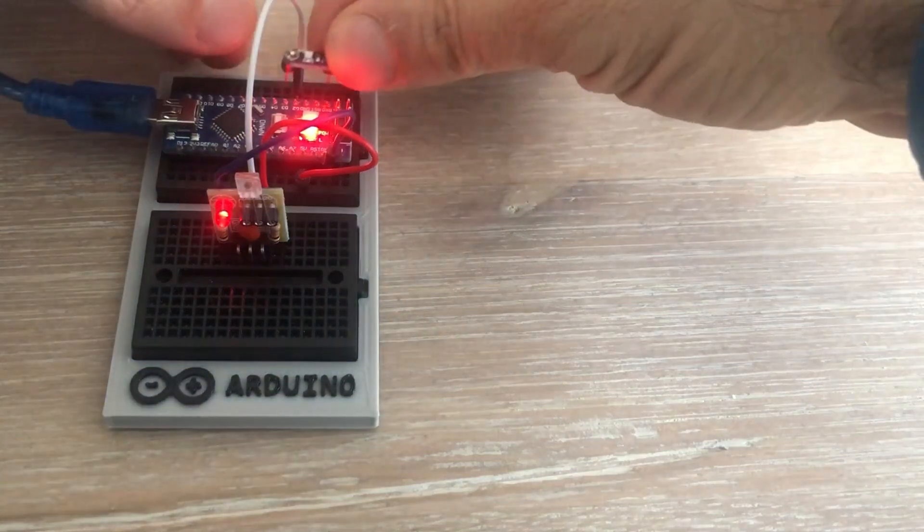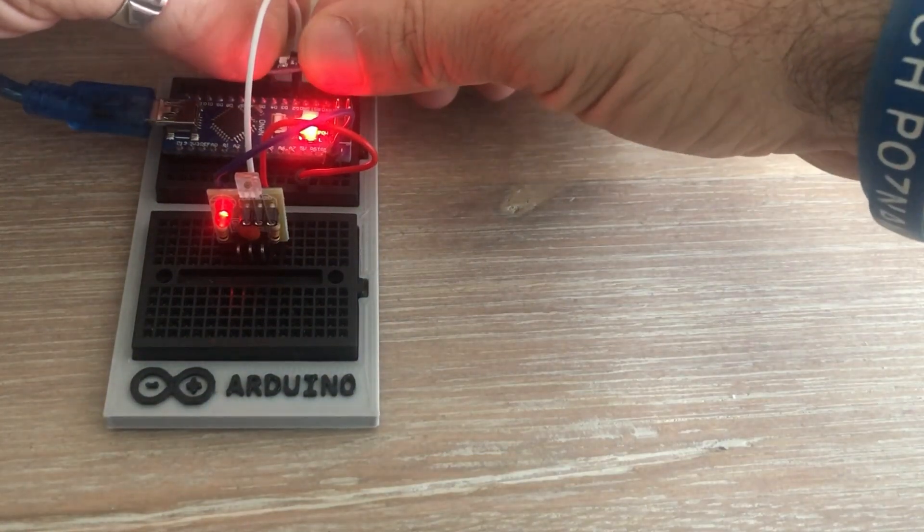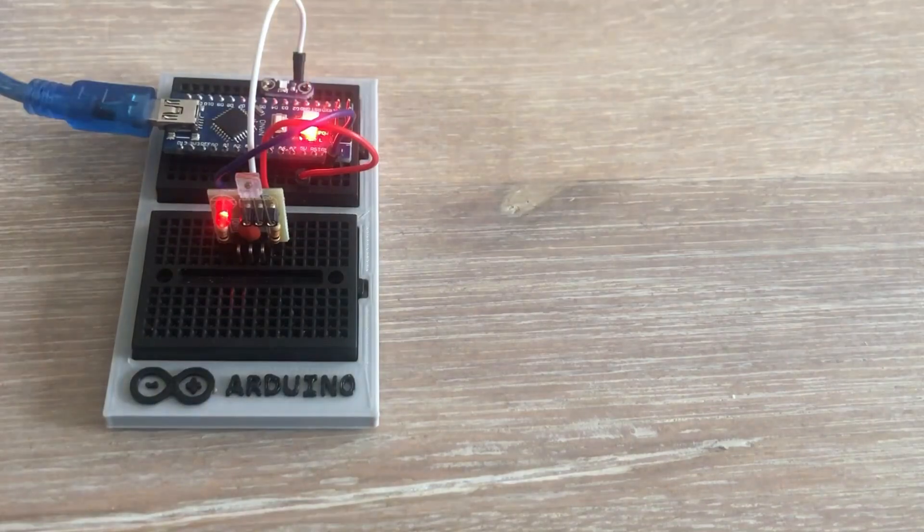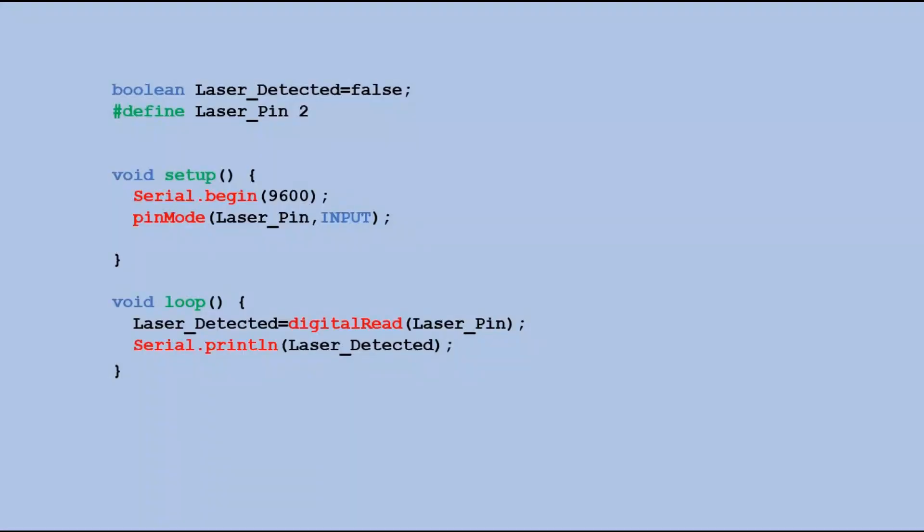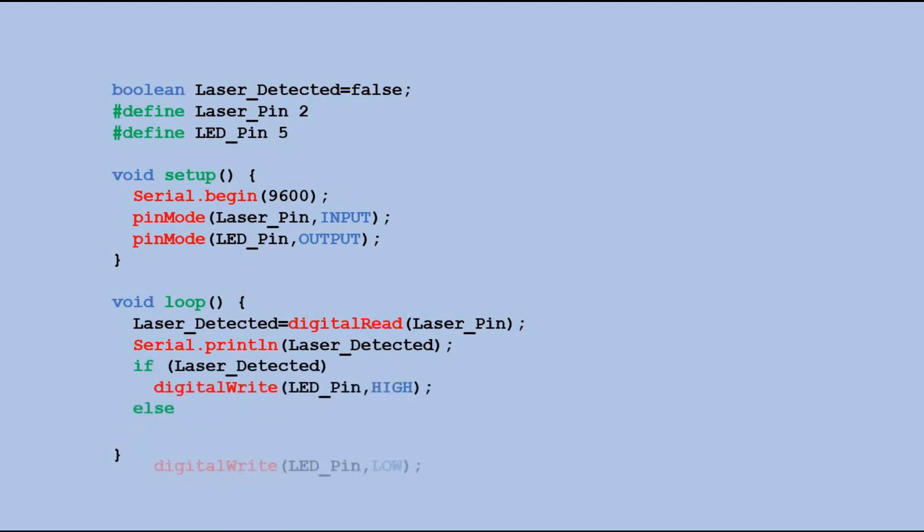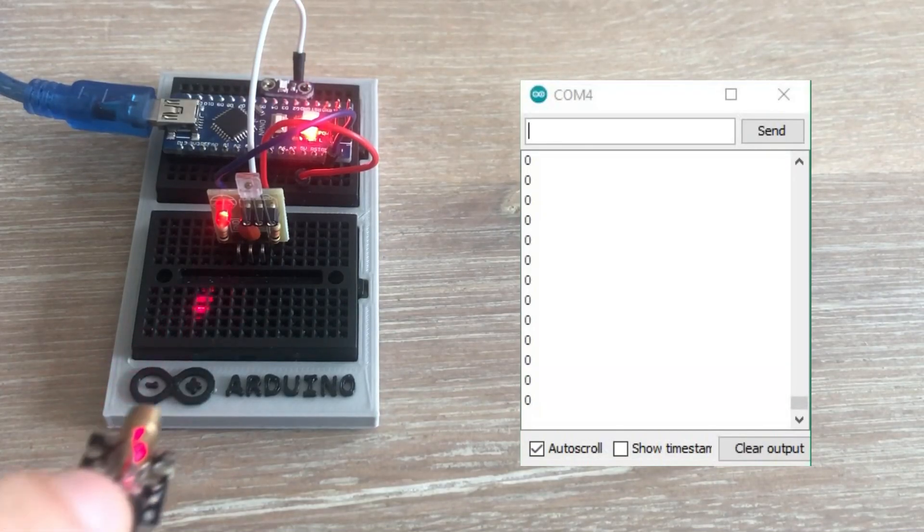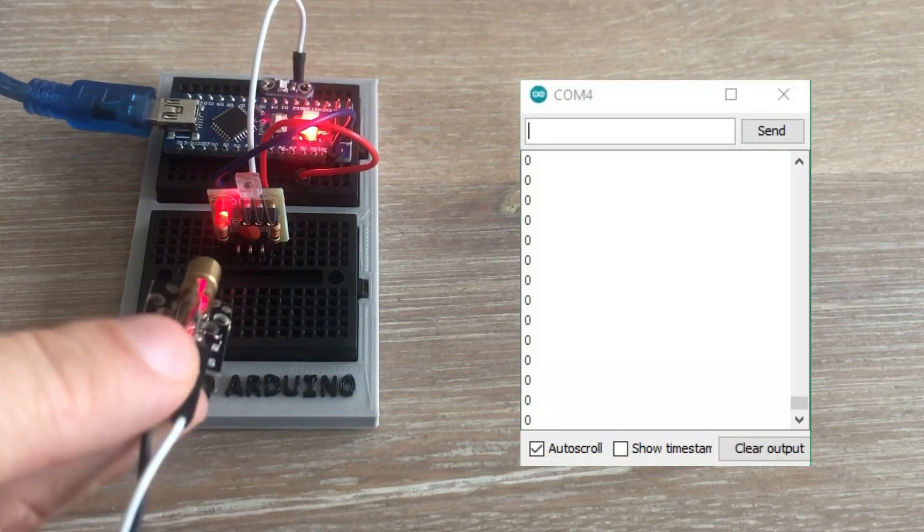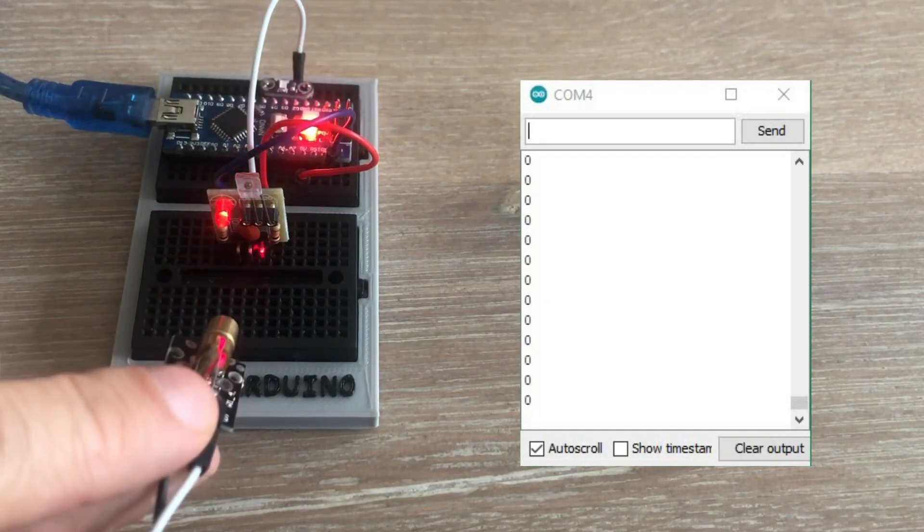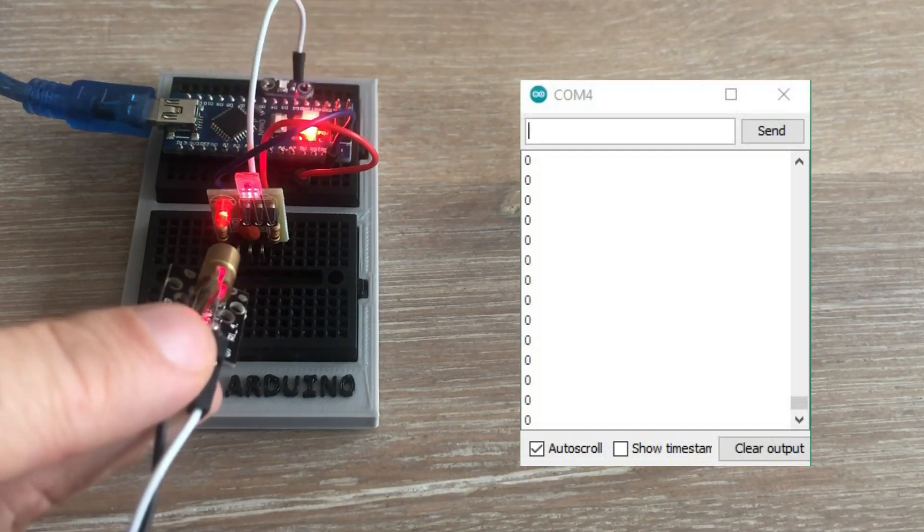Let's slightly improve this simple project by adding LED connected to digital pin 5. All we need to do now is to define the LED pin, set it as an output and add an if statement that will be sending high or low signals to the LED pin depending on the reading from the laser receiver. Will it work? It does.